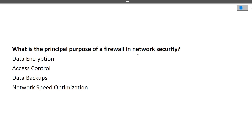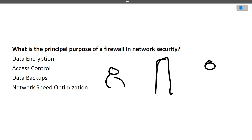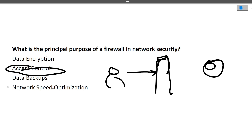The next question is: what is the principal purpose of a firewall in network security? Think of it this way — there is a user, a firewall, and a server. The firewall checks every incoming request and blocks uncertain or unauthorized requests. So the answer here is access control.